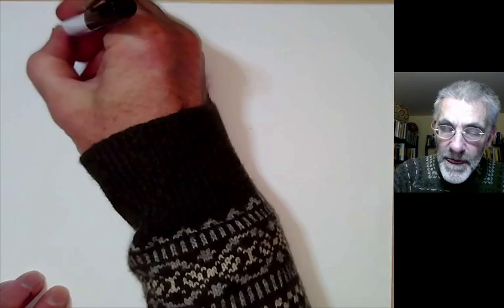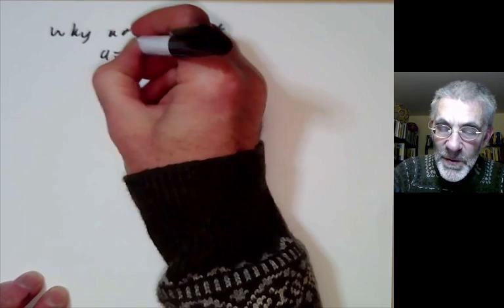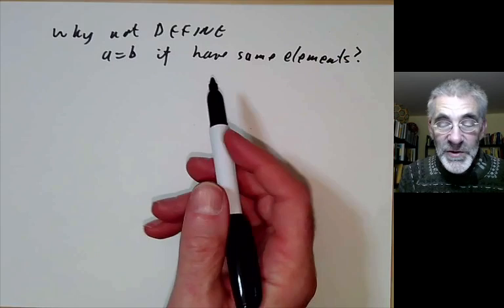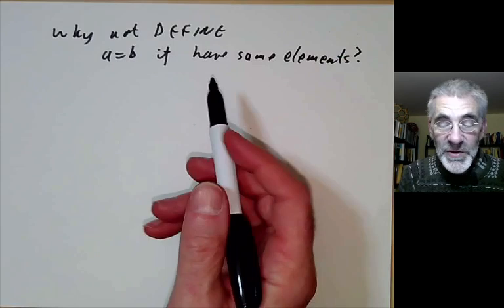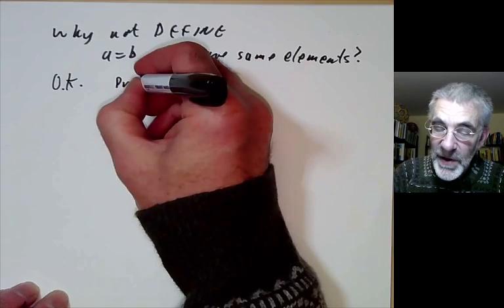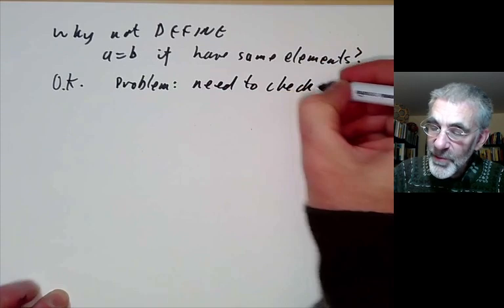So what we could do is why not define two sets to be equal if they have the same elements. So this looks at first sight as if we could dispense with one axiom. Well, it's fine to do this. There's only one little problem. We need to check the properties of equality.